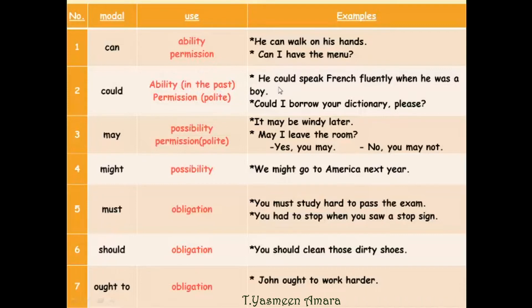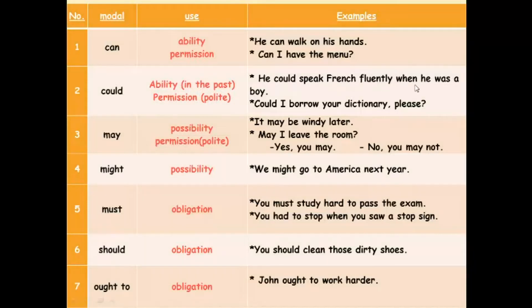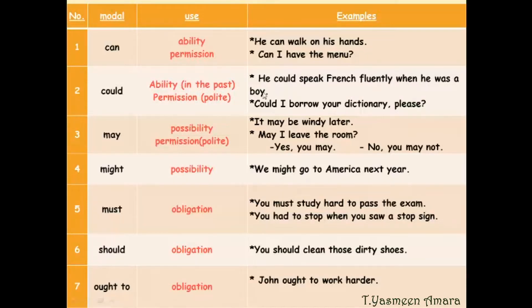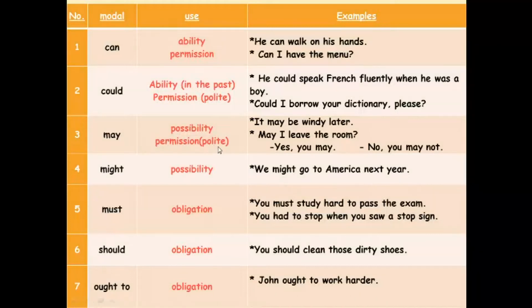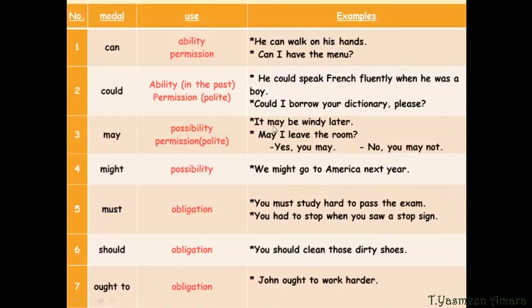Number two: could. We use 'could' for ability in the past and permission in a polite way. Examples: 'He could speak French fluently when he was a boy.' 'Could I borrow your dictionary, please?' Number three: may. We use 'may' for possibility and permission in a polite way. Examples: 'It may be windy later.' 'May I leave the room?' — Yes, you may. No, you may not.